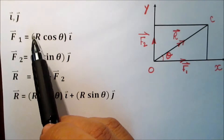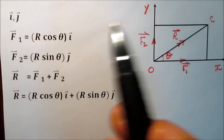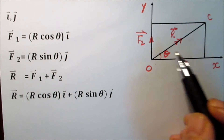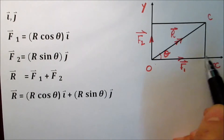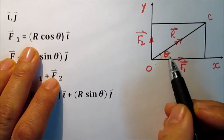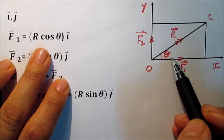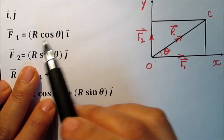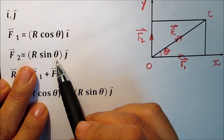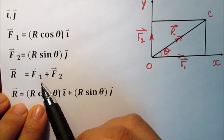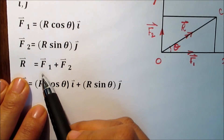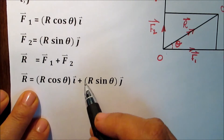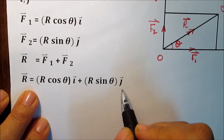If i and j are two perpendicular unit vectors in the directions of the x-axis and y-axis, to resolve a force R in the directions of i and j, assuming F1 is adjacent to angle theta, then F1 equals R cosine theta in the direction of i, and F2 equals R sine theta in the direction of j. So R equals R cosine theta times i plus R sine theta times j.